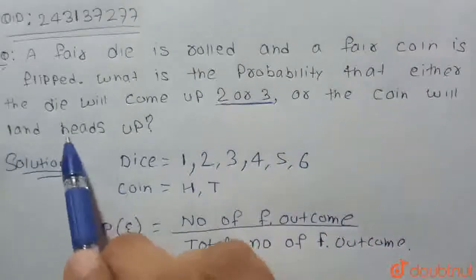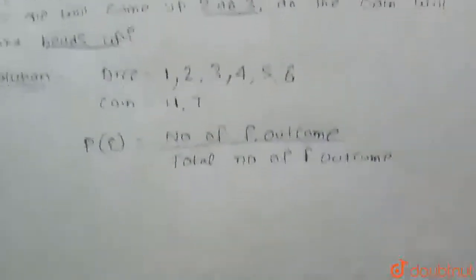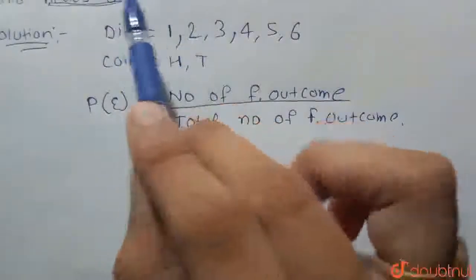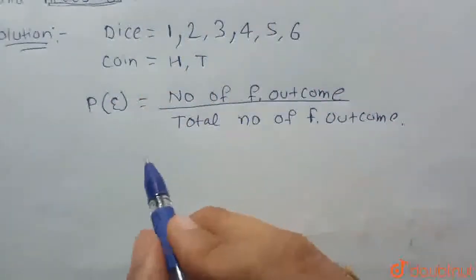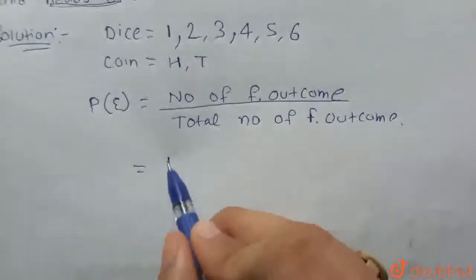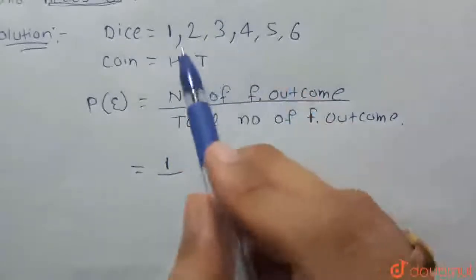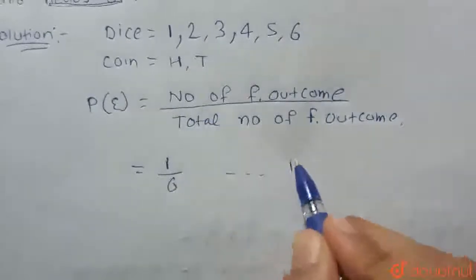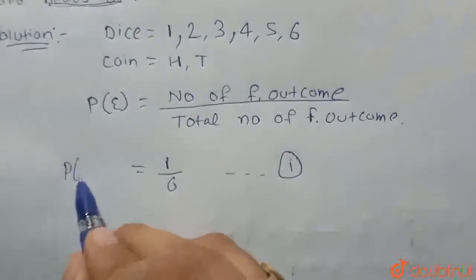Or the coin will flip — that is heads up — which means there is also one possibility. So for the die, we have been asked the probability that either the die will come 2 or 3. The number of favorable outcomes is 1 and the total number of outcomes for the die is 1, 2, 3, 4, 5, 6 — that is 6. So this gives us equation 1 for the die: probability of die = 1/6.